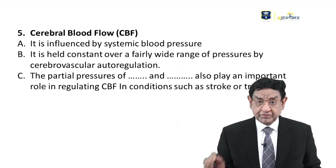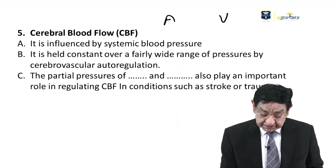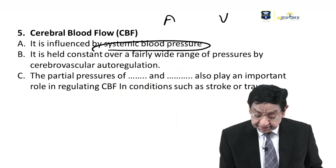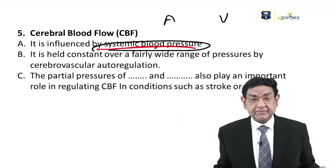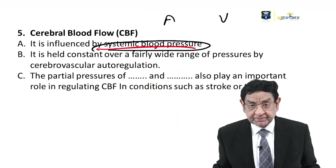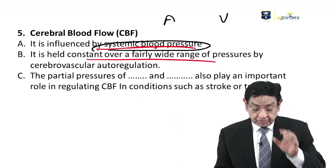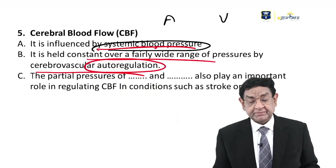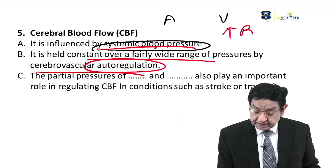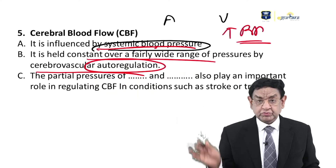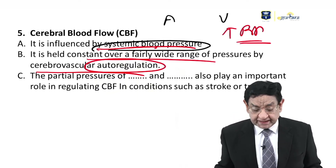The third parameter is cerebral blood flow, where blood goes in by artery and comes back by veins. This is influenced by systemic BP — a very important point. So definitely when BP rises, intracranial pressure will also tend to rise, but it is kept under great control by cerebrovascular autoregulation. A patient may have high systemic BP but autoregulation can, to a great extent, control cerebral blood flow.